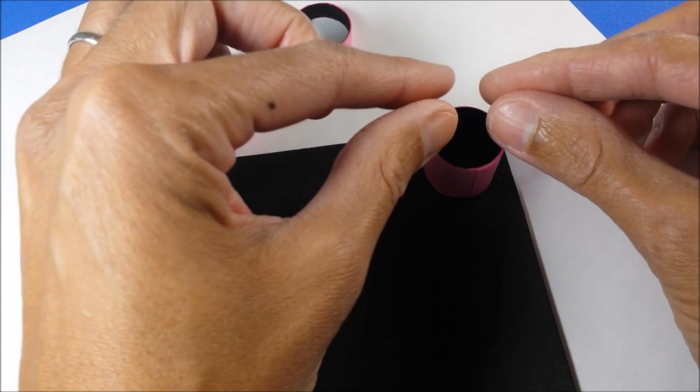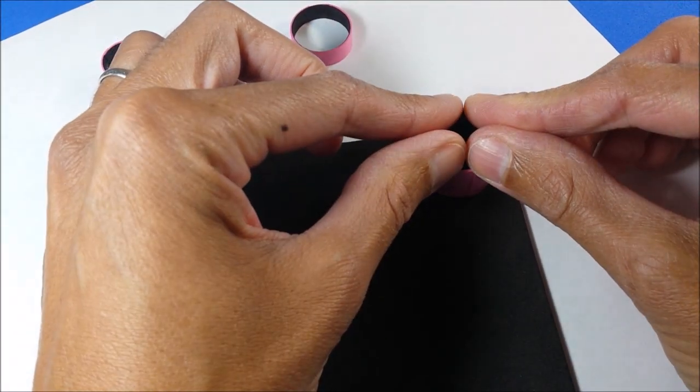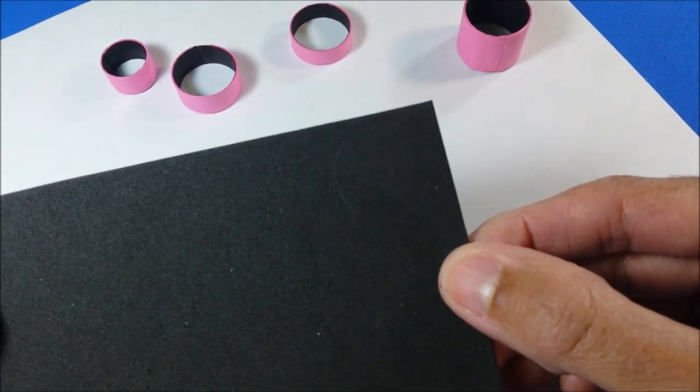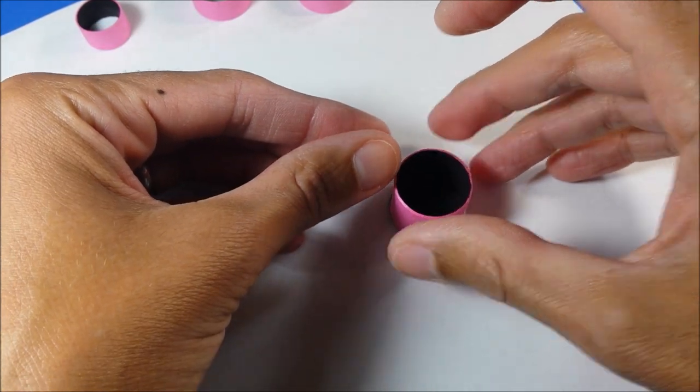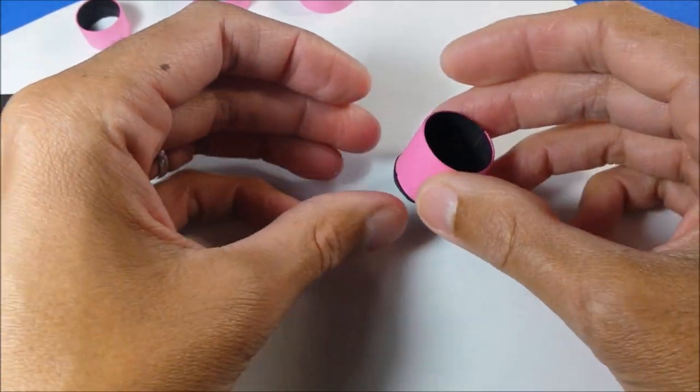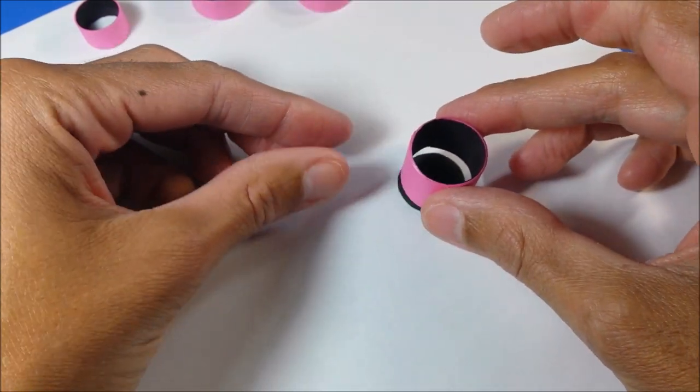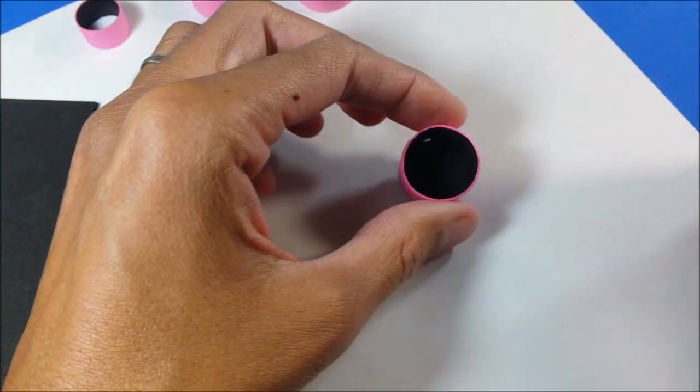When done, I press each one onto a bit of black craft foam paper and cut it out. I'm trying to use it as my bottom, so if it won't fit, just take it and trim it until it's good, and then I just glue it in place.